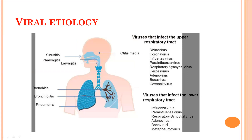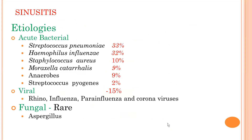Now sinusitis: etiology — bacteria account for 85% of cases and viruses only 15%. The most important bacteria are Streptococcus pneumoniae (33%) and Haemophilus influenzae (32%), Staphylococcus aureus about 10%, Moraxella catarrhalis 9%, anaerobes 9%, and Streptococcus pyogenes 2%. Viral causes include respiratory viruses — usually rhinovirus, influenza, para-influenza, and coronavirus. Fungal causes are very rare and usually allergic; Aspergillus is one cause.